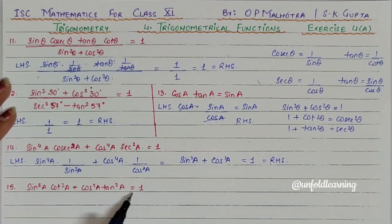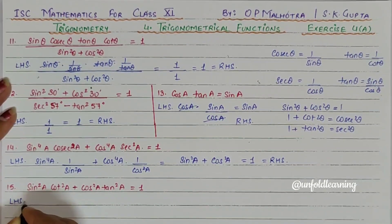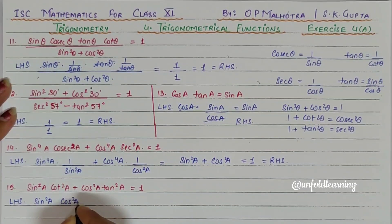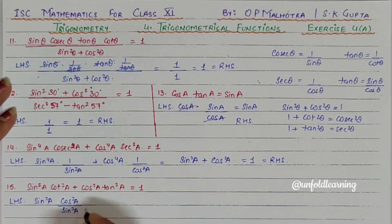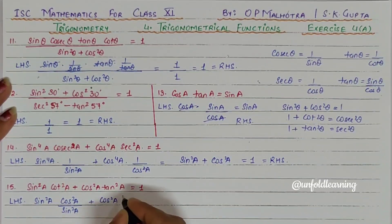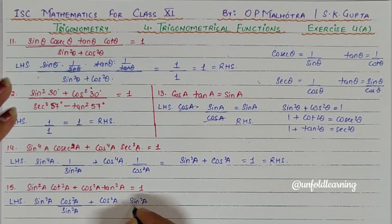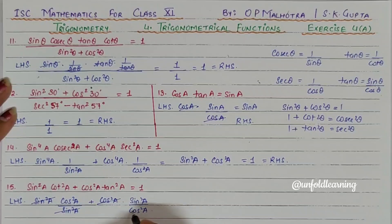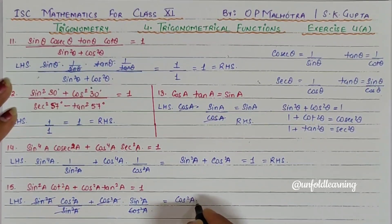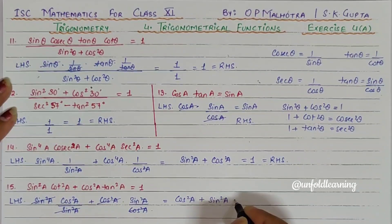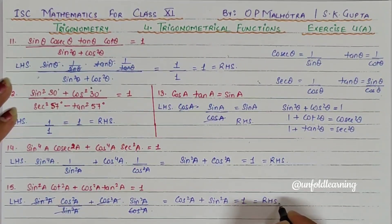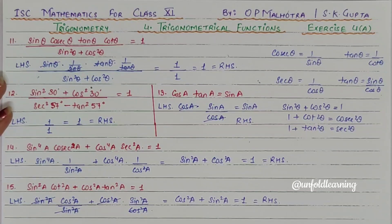Question number 15: sin²A · cot²A + cos²A · tan²A is equal to 1. Taking LHS, we have sin²A — we can write cot²A as cos²A upon sin²A — plus cos²A — we can write tan²A as sin²A upon cos²A. The sin² cancels and the cos² cancels, giving us cos²A + sin²A, which equals 1, and this is our RHS. Hence, this is the solution. You can solve all these questions with the circle method as well, which I have shown in previous videos.